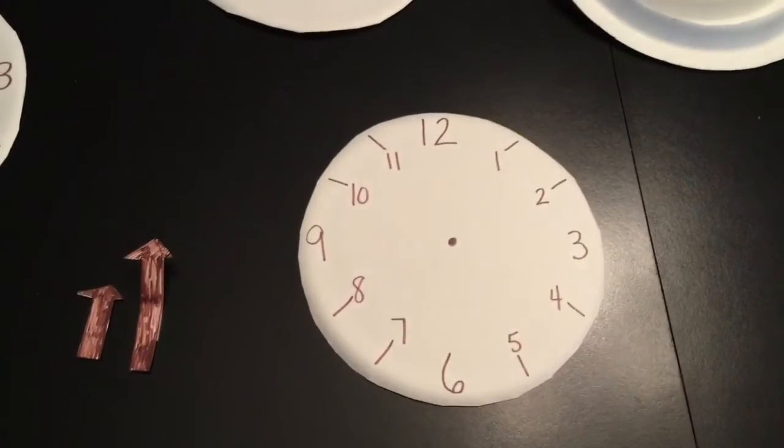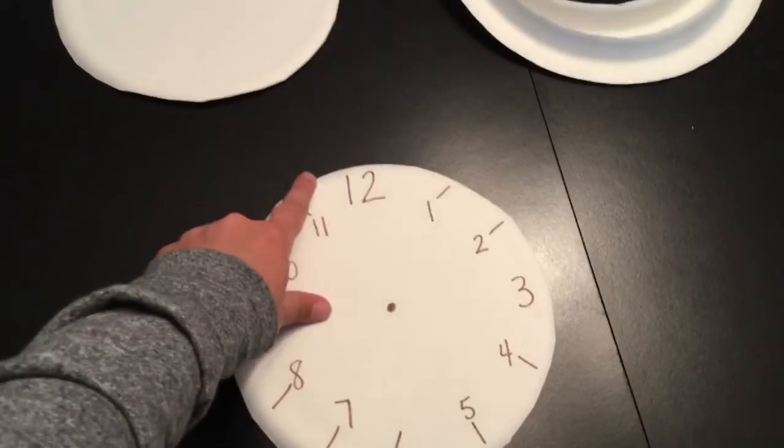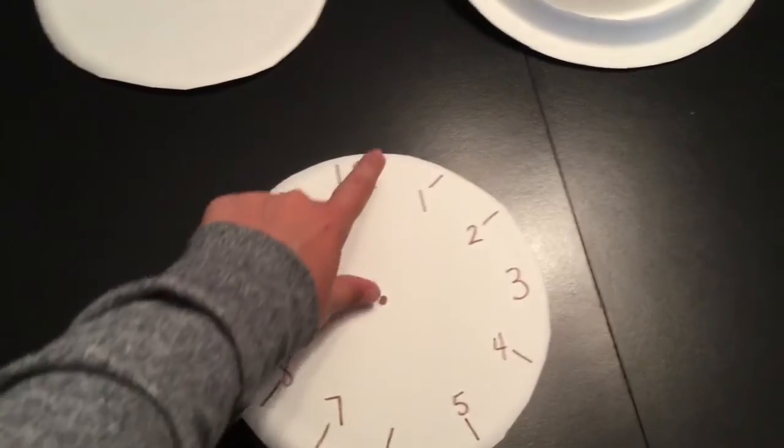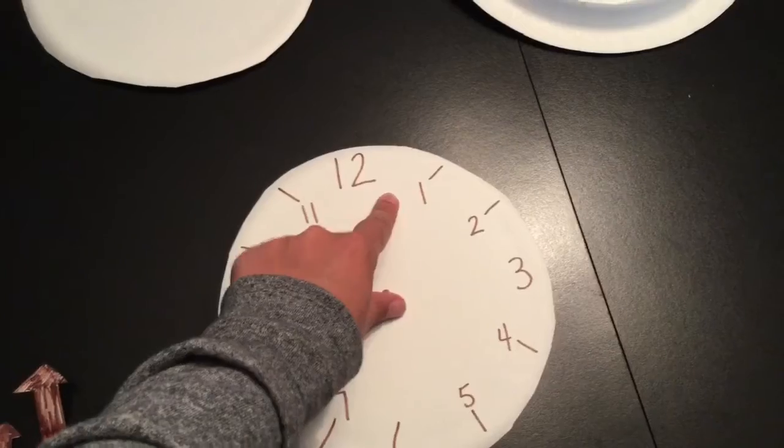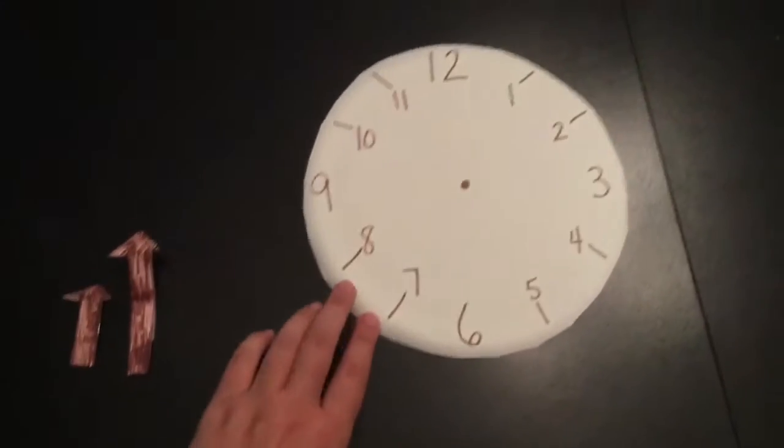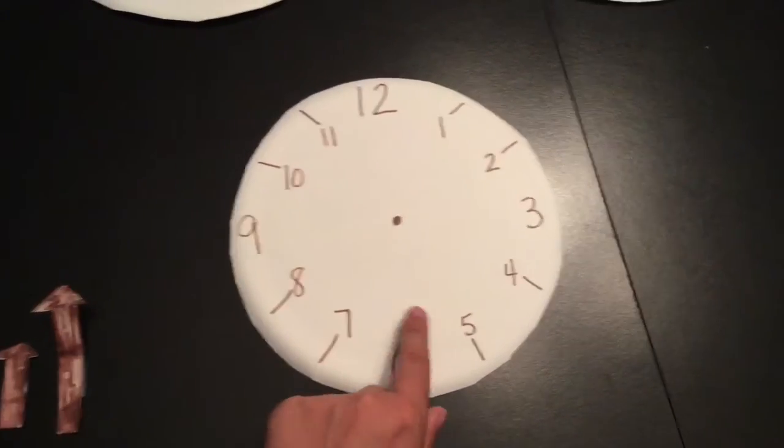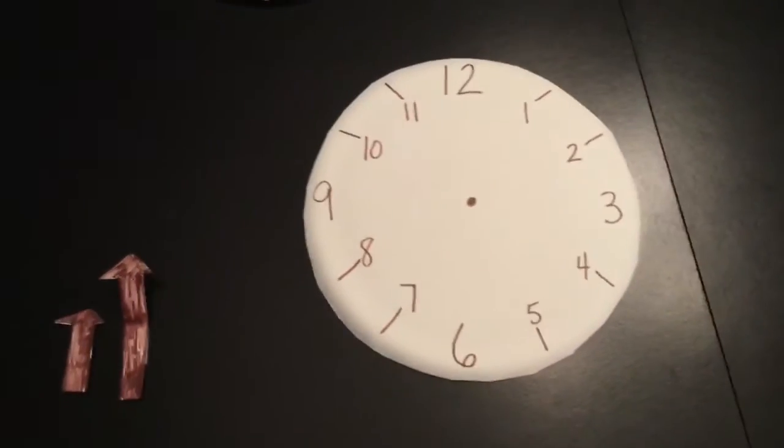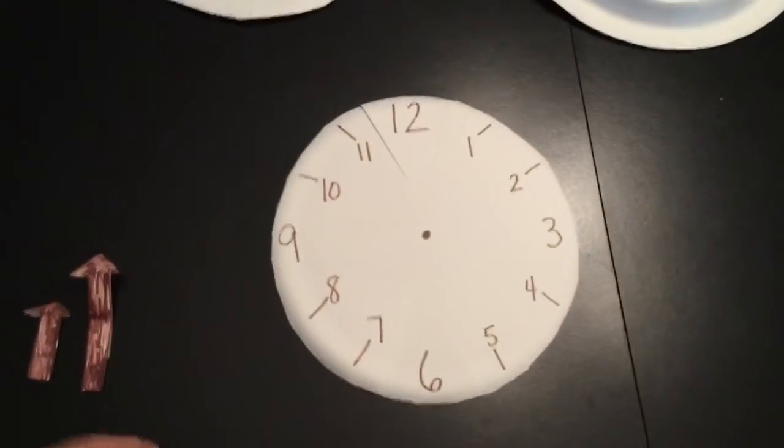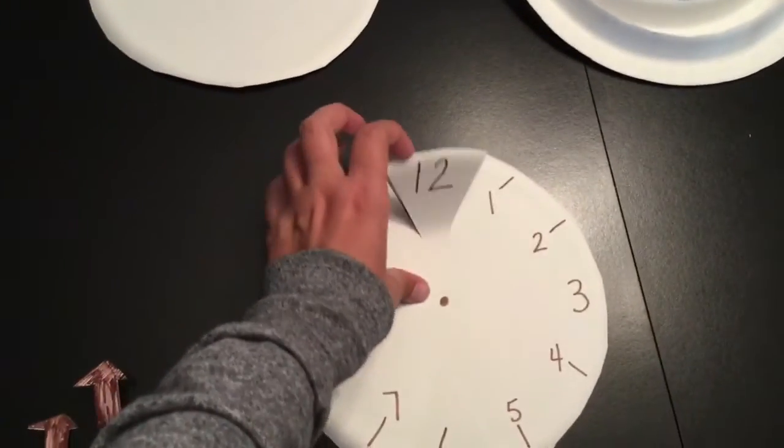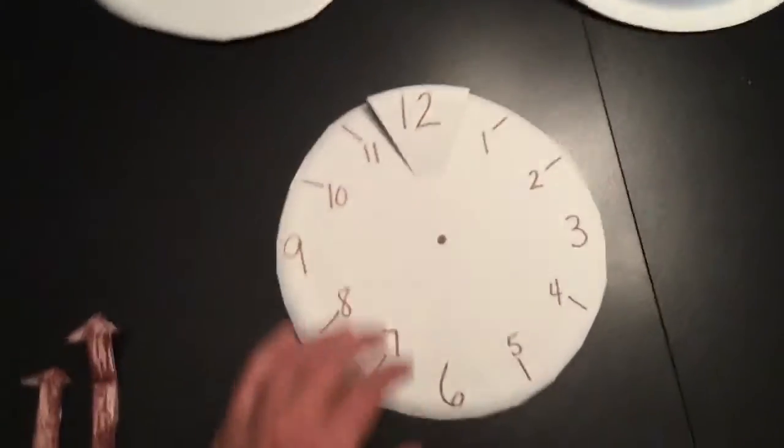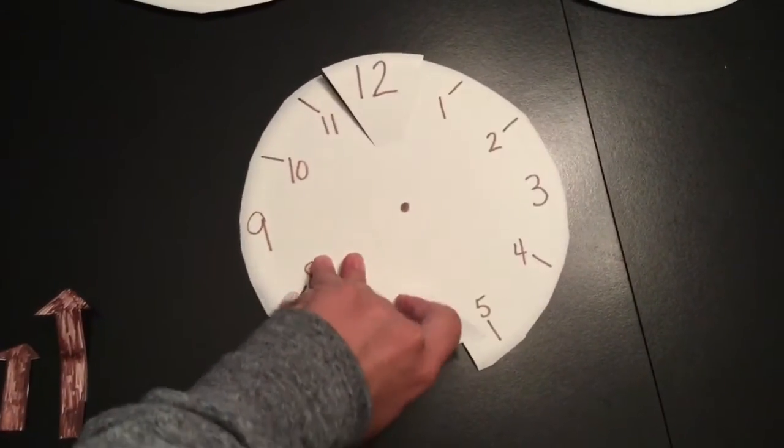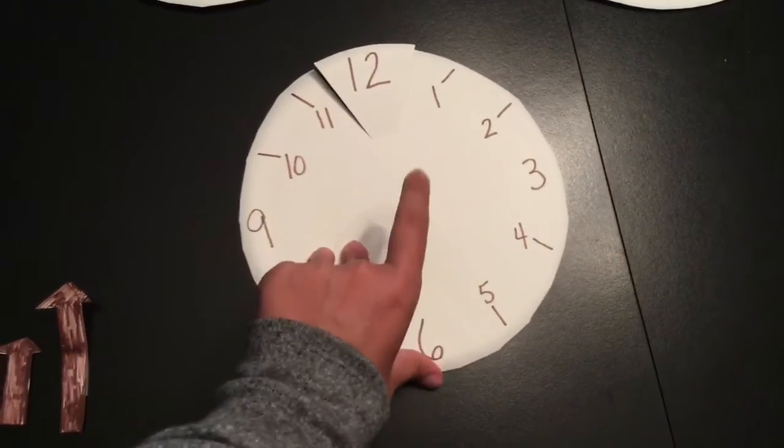Now you're going to use your scissors to cut a line this way and a line this way around the 12, and then a line here and here around the 6. I cut my lines so that the 12 can move and the 6 can move.